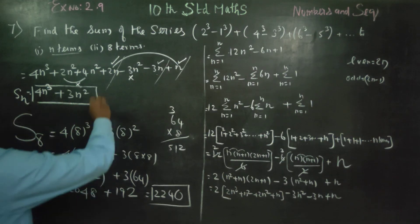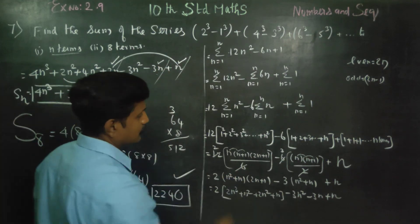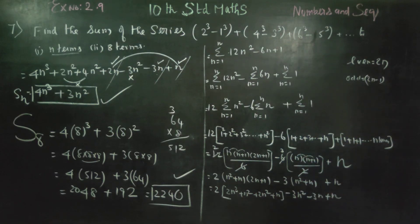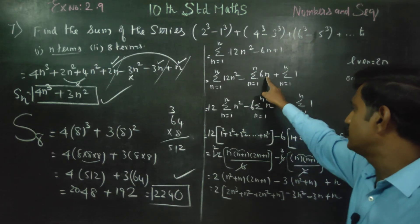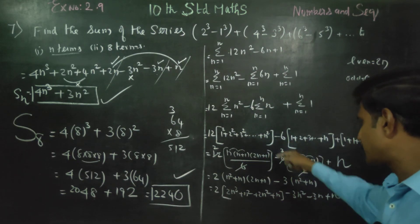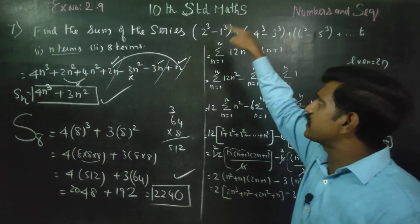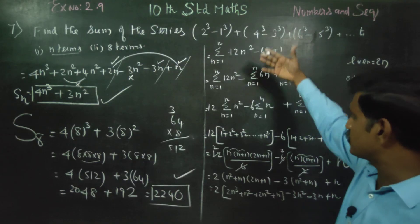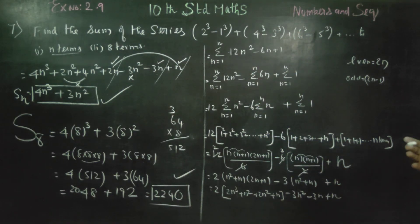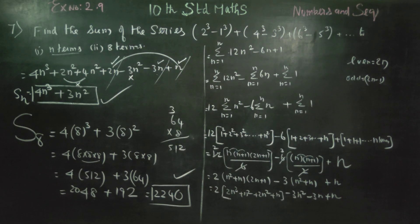This is the Sn answer and S8 answer — a double question. It is a very important question. You can learn the concept. We used the square concept, natural numbers concept, and derived the formula. For special sums involving sigma, use the sum of squares and natural numbers formulas. Sn equals 4n cube plus 3n squared; for n equals 8, you get S8. Thank you.